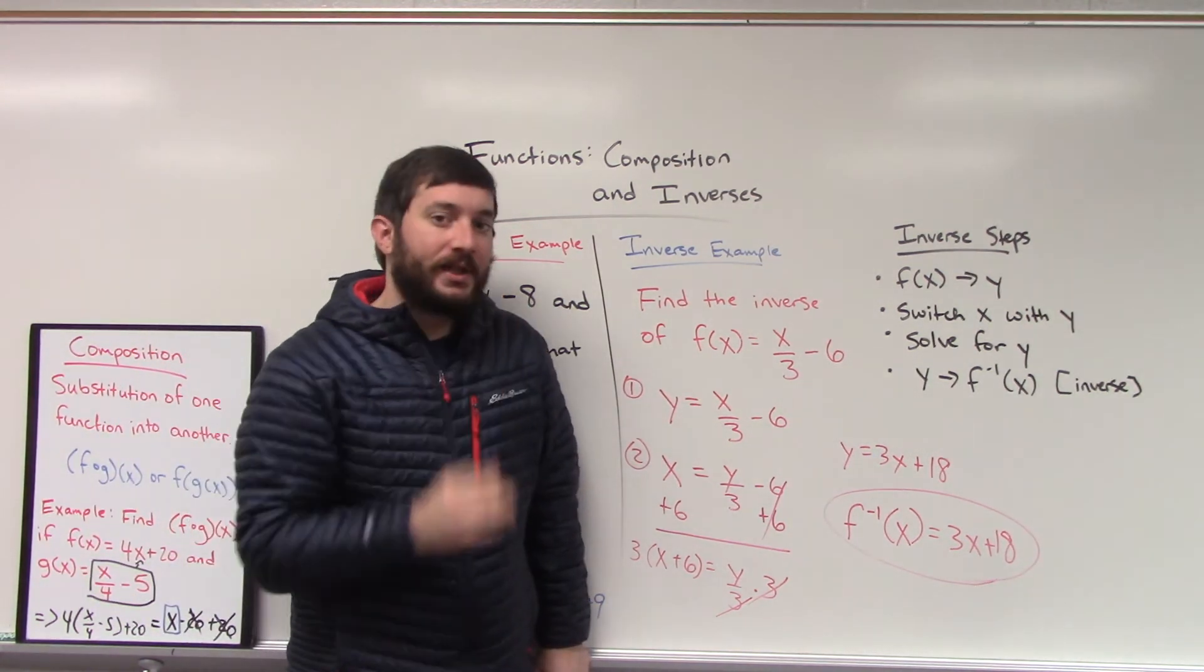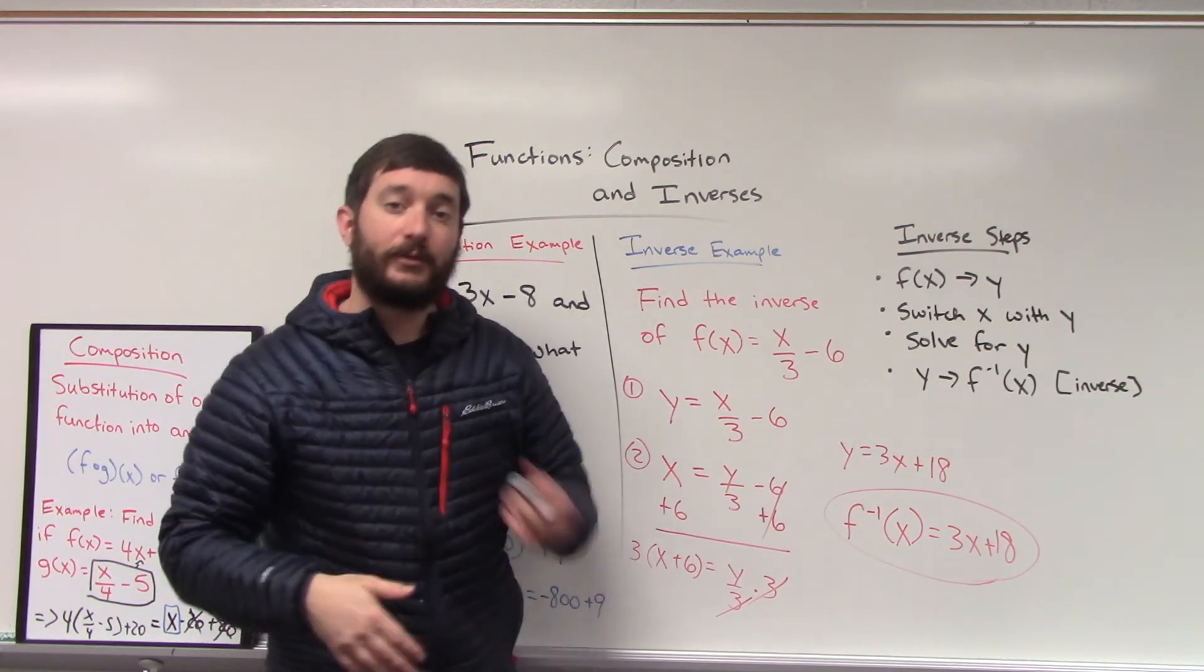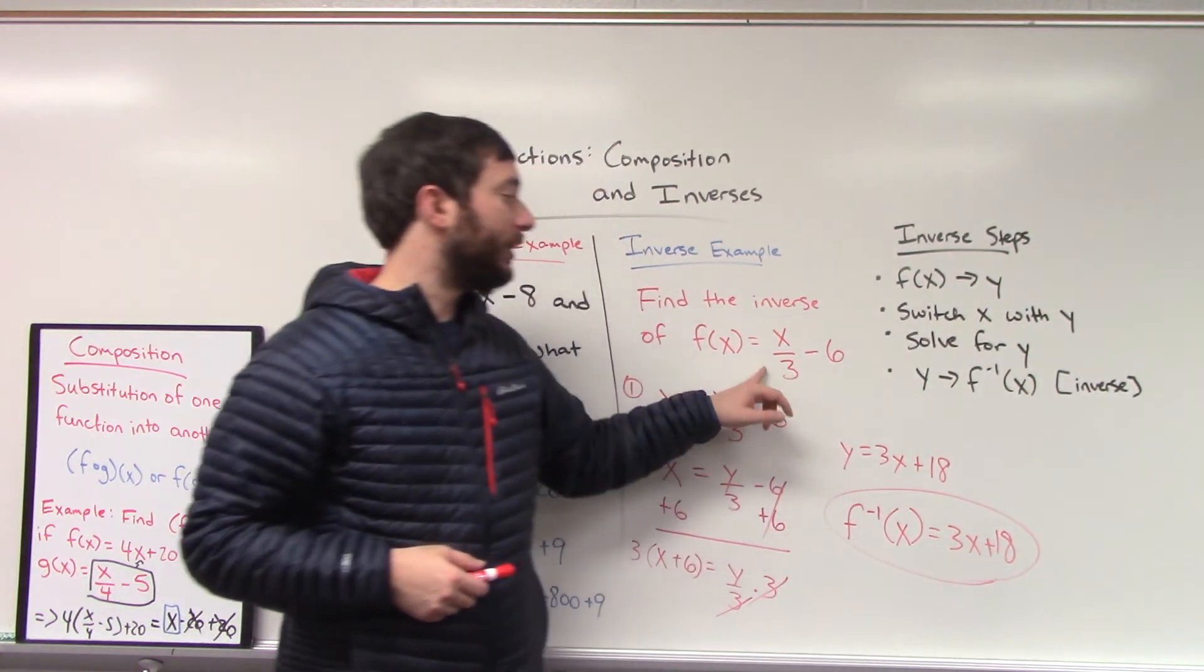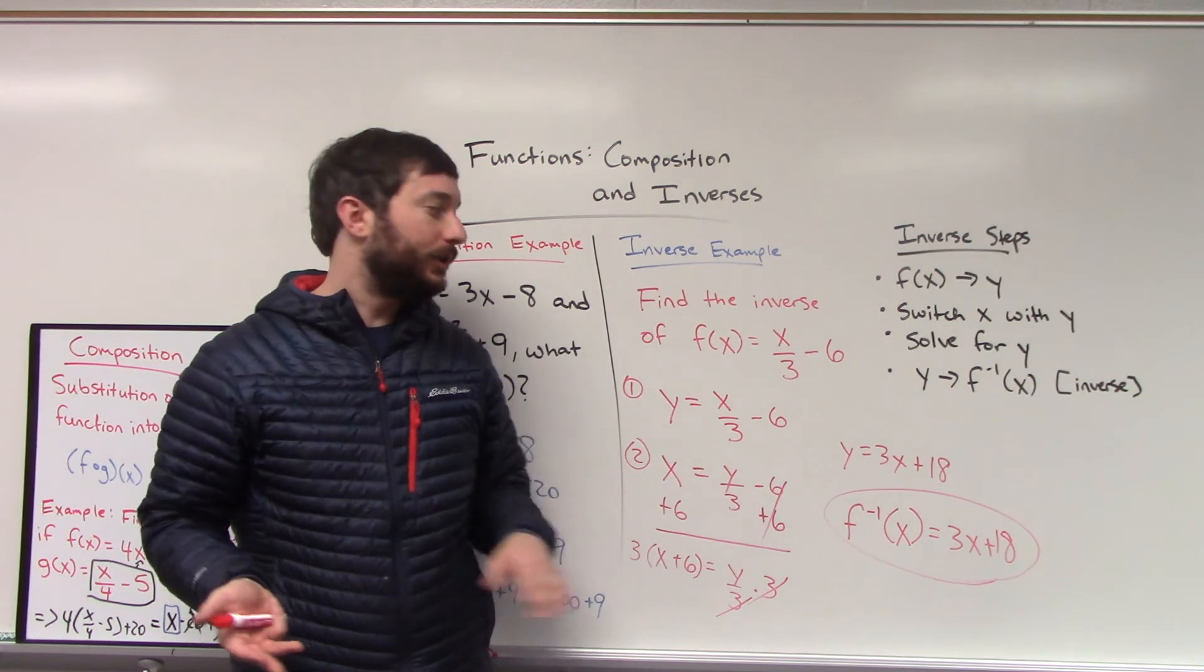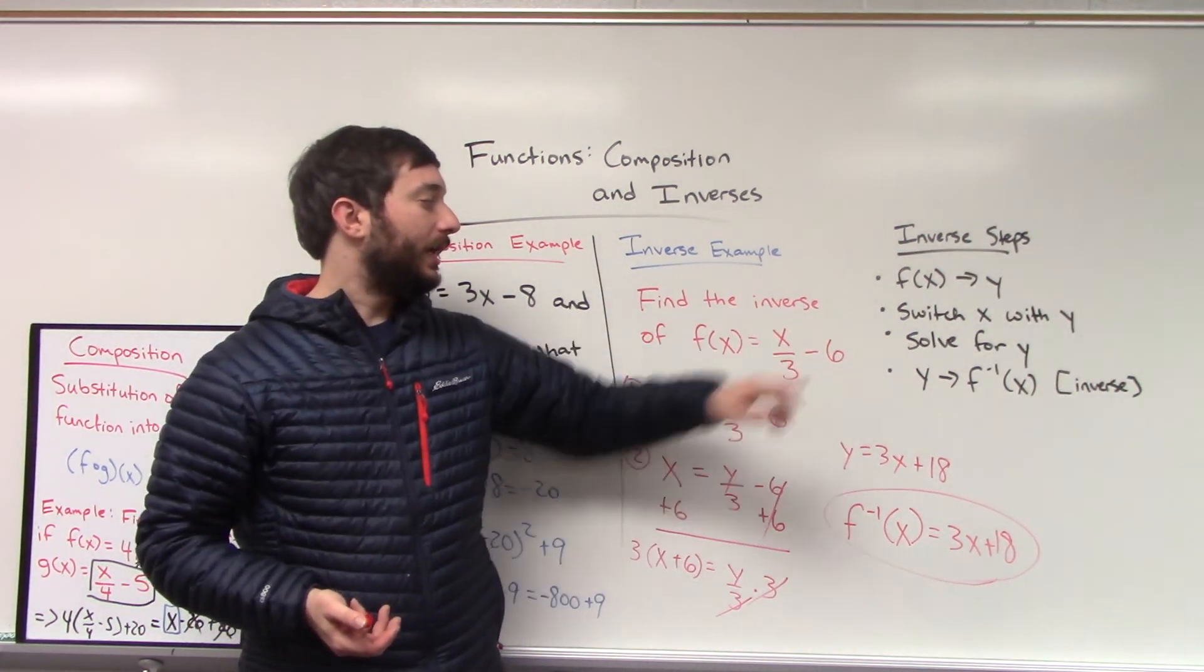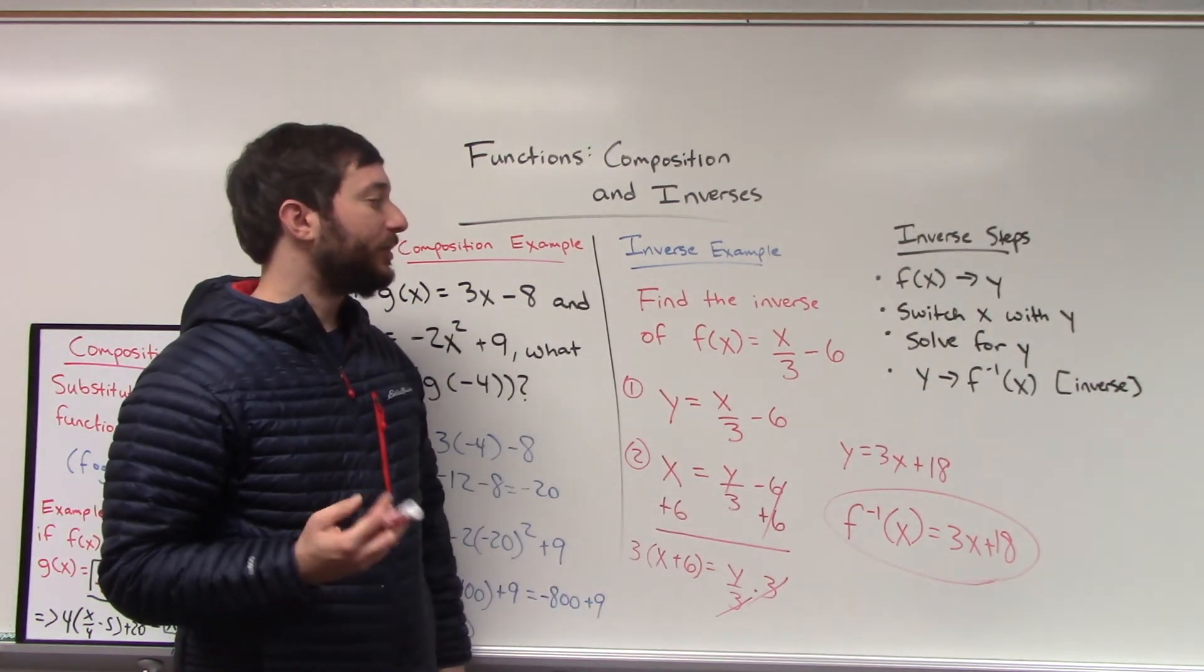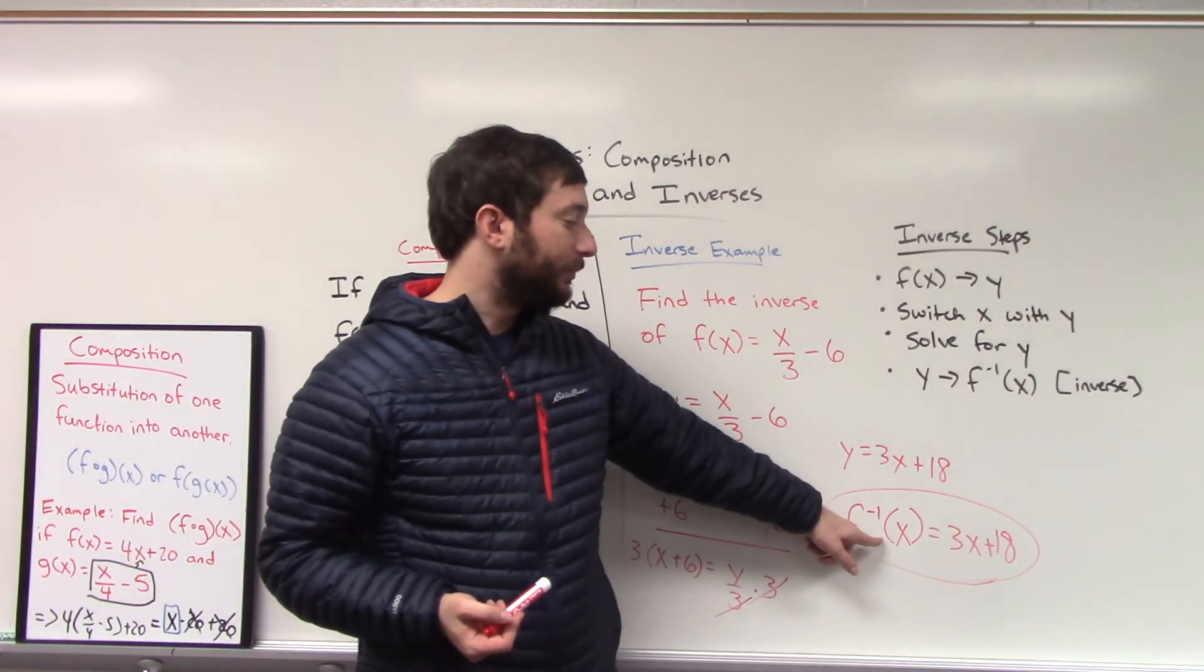So a couple things to note here. Number one, inverses involve swapping x and y, but they also, for functions, involve opposite operations. Notice we started with the subtraction, we ended up with addition. We started with division, we ended up with multiplication. Now, the numbers might be different, so you do need to actually solve this out. We started with a negative six, we ended up with a positive 18. That was due to us adding six, multiplying by three. But those operations do show up when you're trying to solve for the inverse, and this is what your inverse notation will look like.